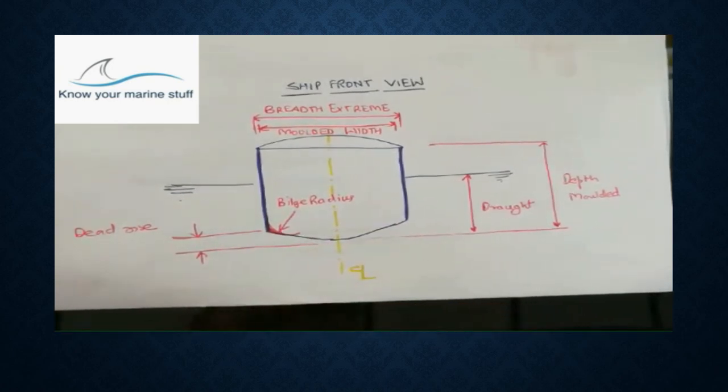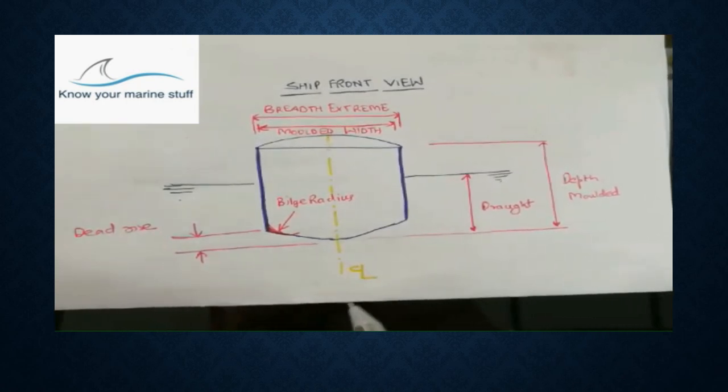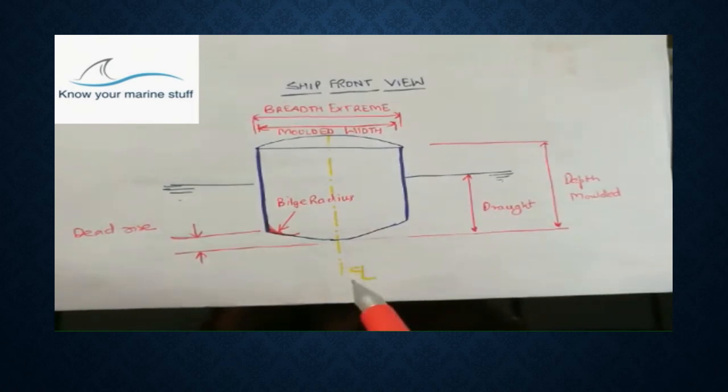The centerline. When we look at the ship from the front view, it is represented by this yellow line. This is known as the centerline.